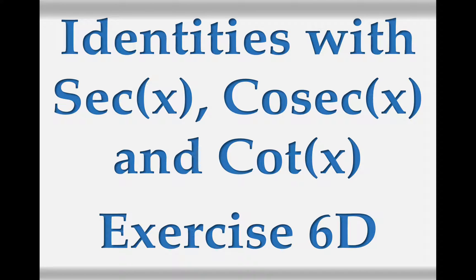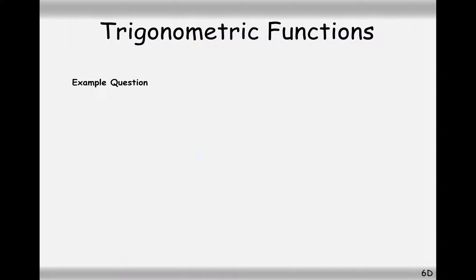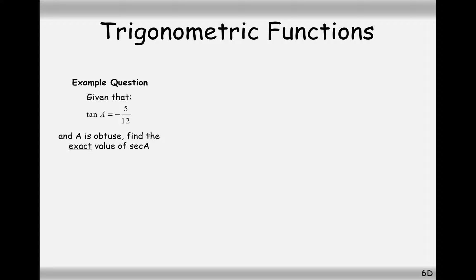Hello there and welcome to the series of videos going through the content of A-level maths. Here we're looking at identities with sec, cosec and cot, so we can answer questions from exercise 6D. What I want to start on first though is some of these questions where we have to find the exact value of a trigonometric expression given another trigonometric expression and its value.